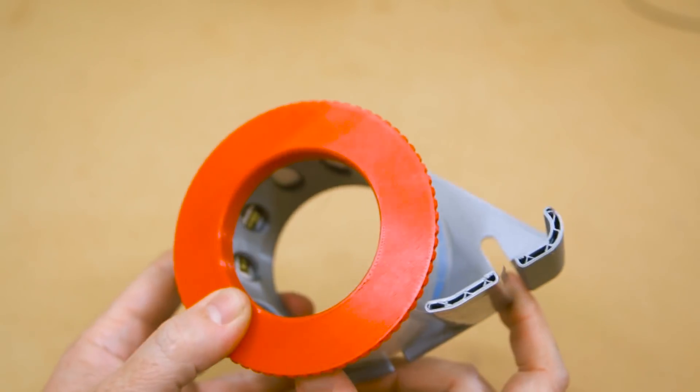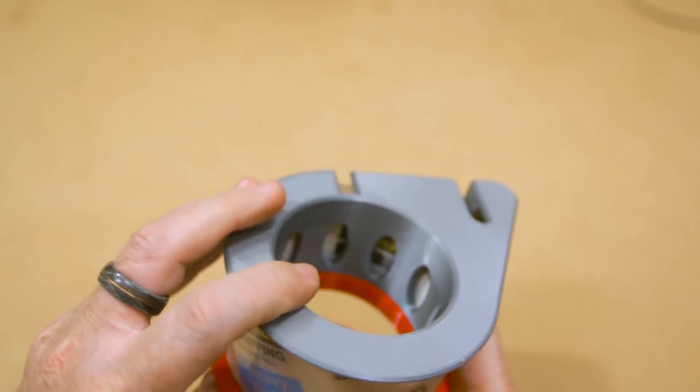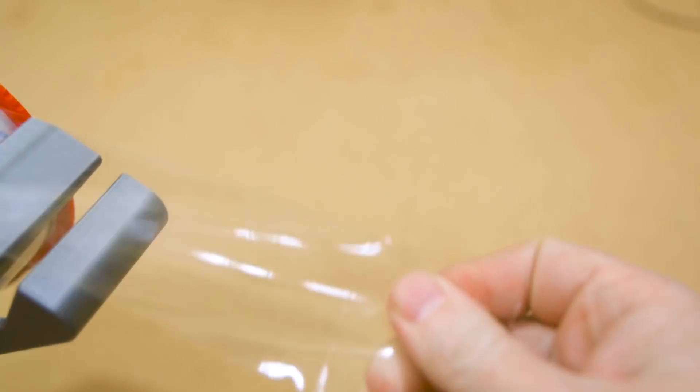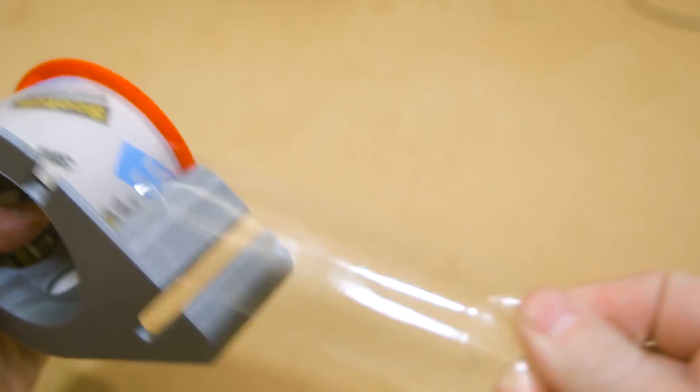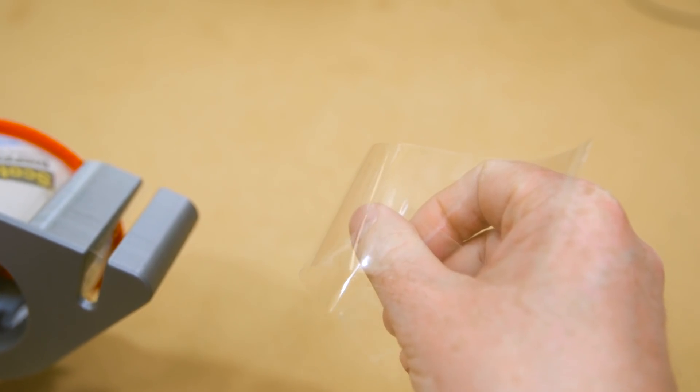One practical little project I printed out this week is this packing tape dispenser by Aiden Rose. I'm sure there are a bunch of designs like this out there, but I liked how this one includes a nice wide spot to hold the end of the tape, and this unique cutout here that lets you come at it with a pair of scissors.